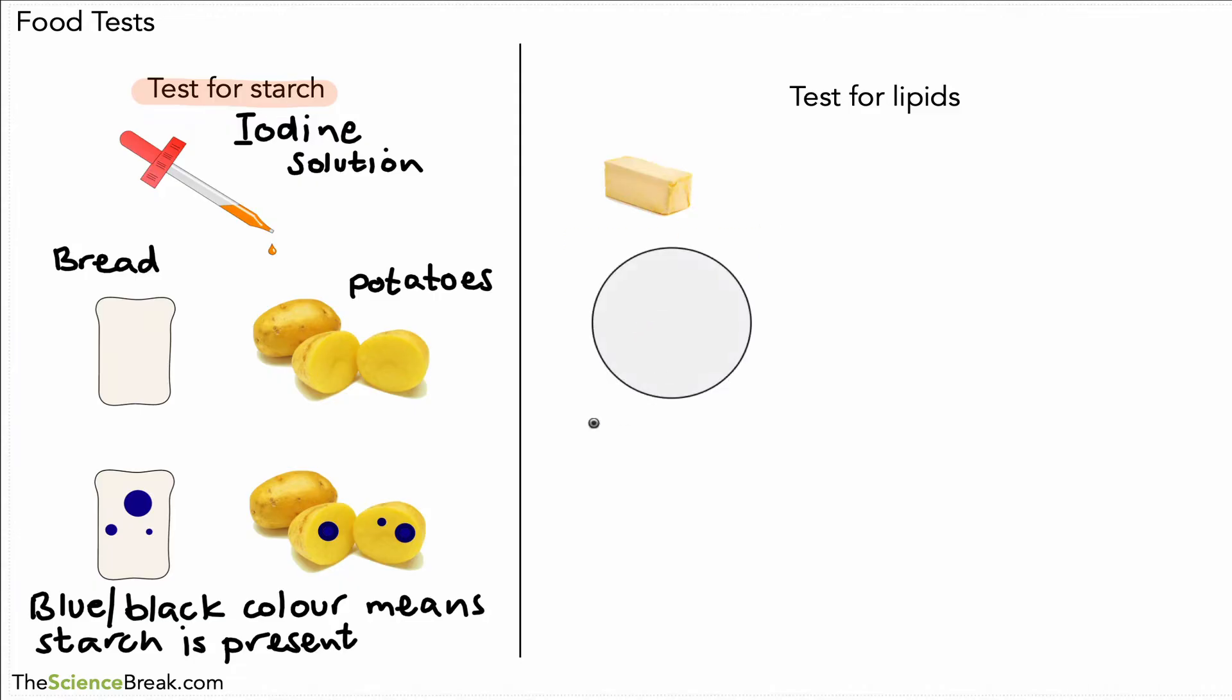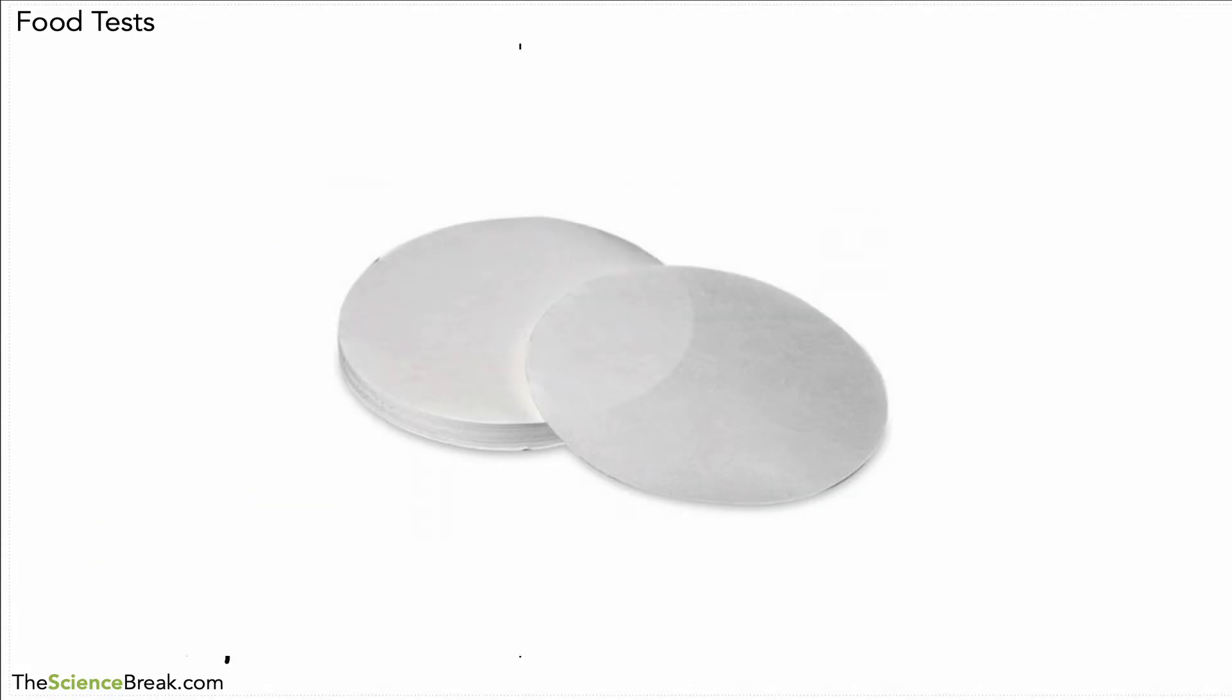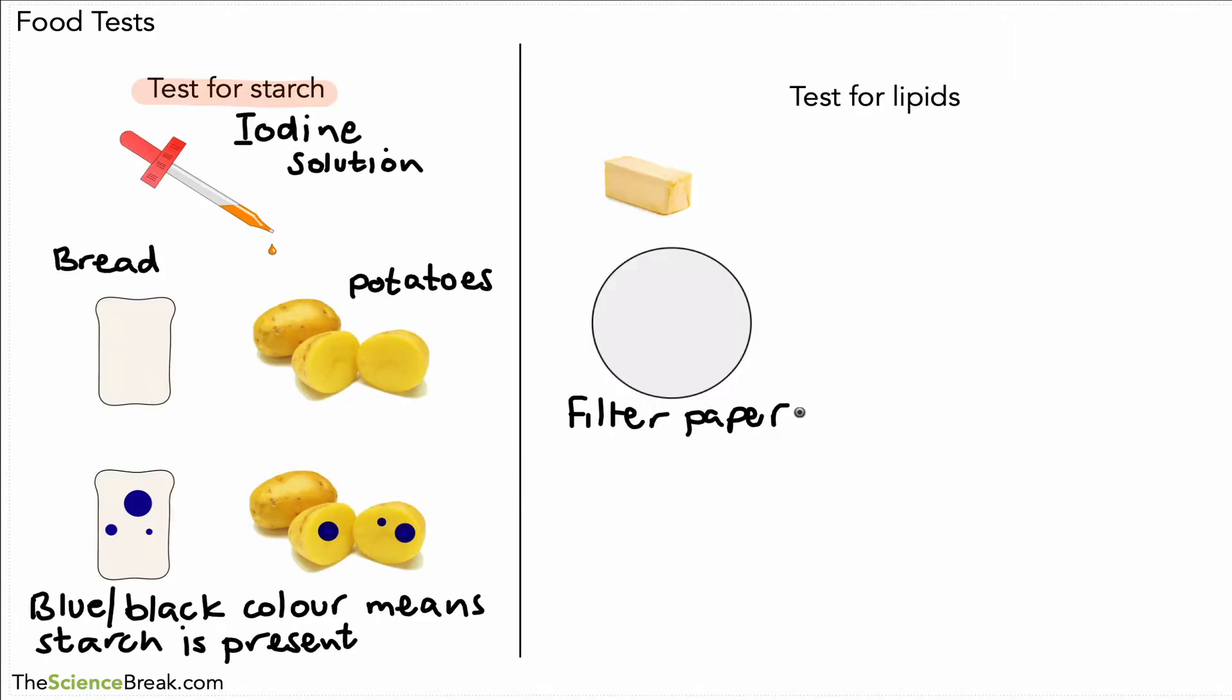Next, we're going to do the test for lipids. One way to do this is to use filter paper. You may have seen this at school - it's usually in discs, round shapes, about 10 to 15 centimeters across.